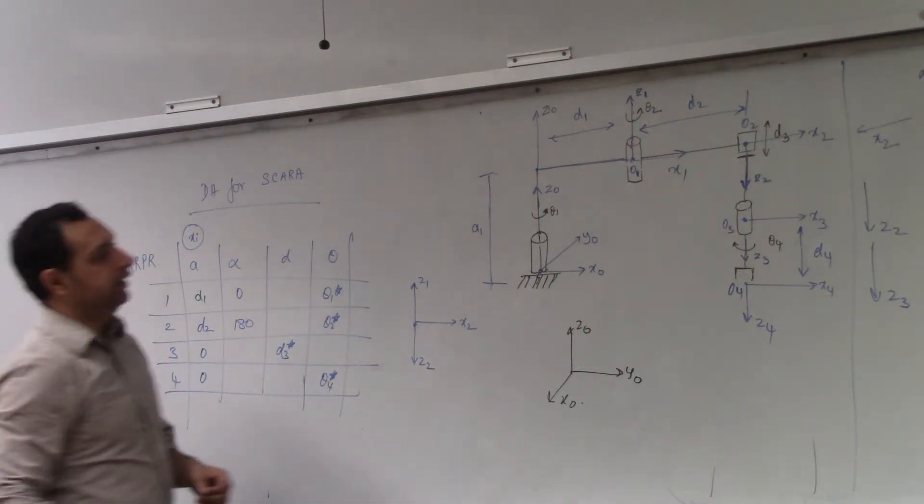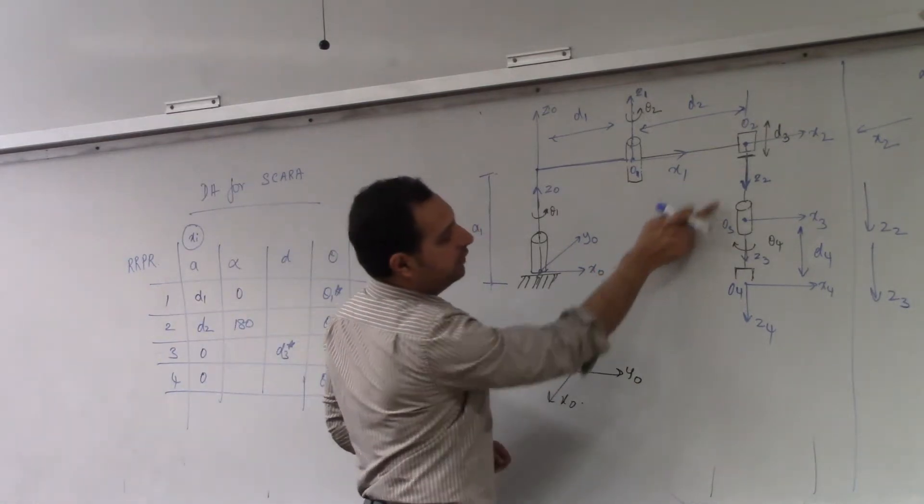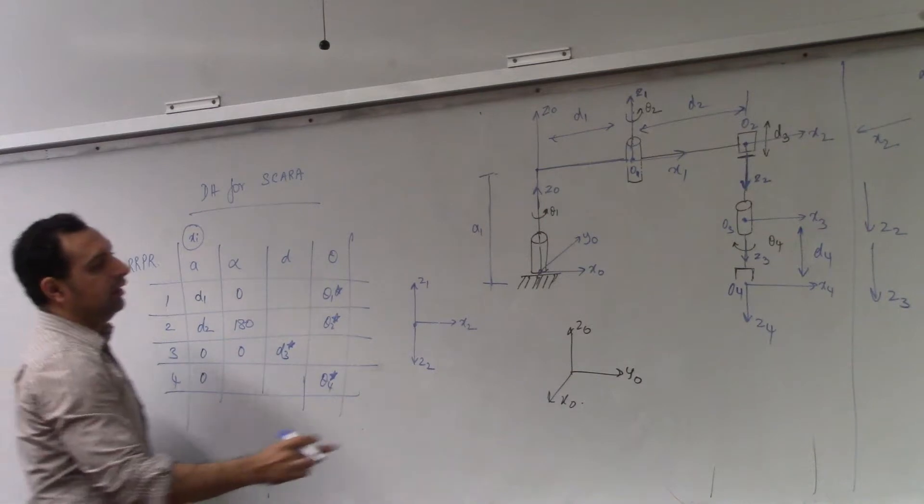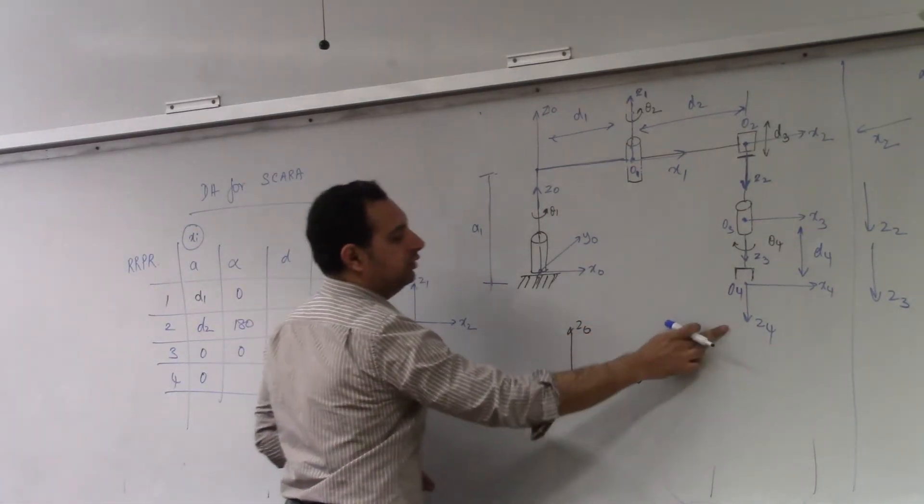Now, let's go here. These two are parallel. Z2, Z3 are parallel. So this will be zero. Again, these two are parallel. So this is going to be zero.